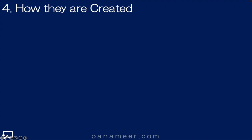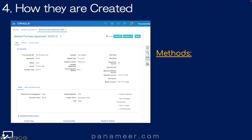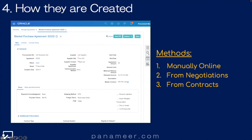Slide four: how purchase agreements are created. As we look at the main purchase agreement page, we break down three ways in which agreements are created. First, manually. Second, from negotiations. And third, from contracts.